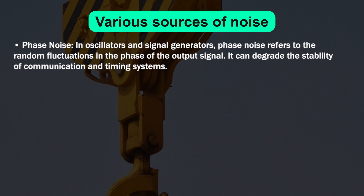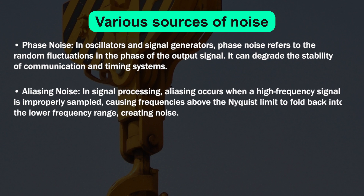The next point is phase noise. In oscillators and signal generators, phase noise refers to random fluctuations in the phase of the output signal, which can degrade the stability of communication and timing systems. In signal processing, aliasing occurs when a high frequency signal is improperly sampled, causing frequencies above the Nyquist limit to fold back into the lower frequency range, creating noise.